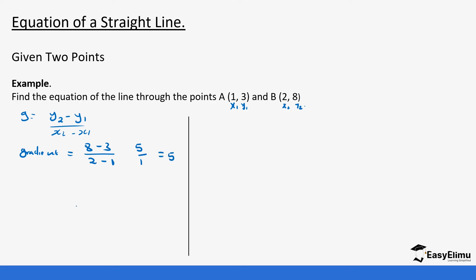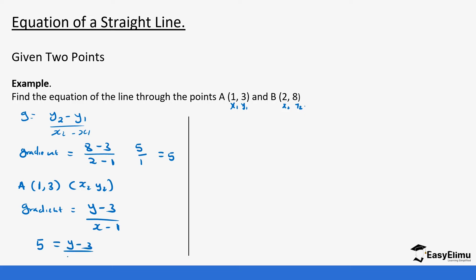Once we have the gradient, we pick one point on the line — we can pick either A or B, so we work with A. We go back to the gradient equation, but now assuming the second point is a general point (x, y). The gradient is y minus y1 over x minus x1, so it becomes y minus 3 over x minus 1. We have been given the gradient which is 5, so: 5 equals y minus 3 over x minus 1.